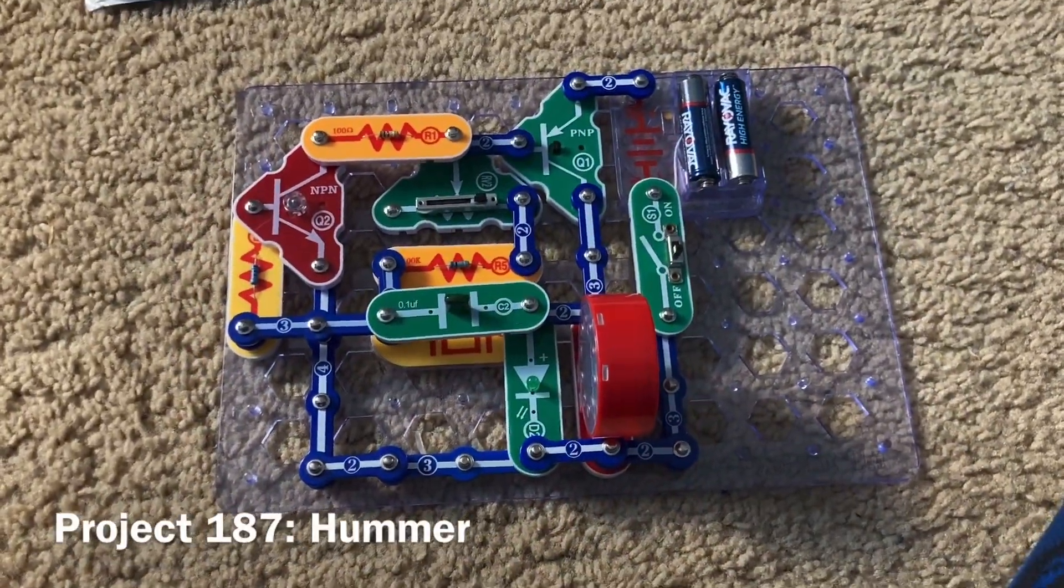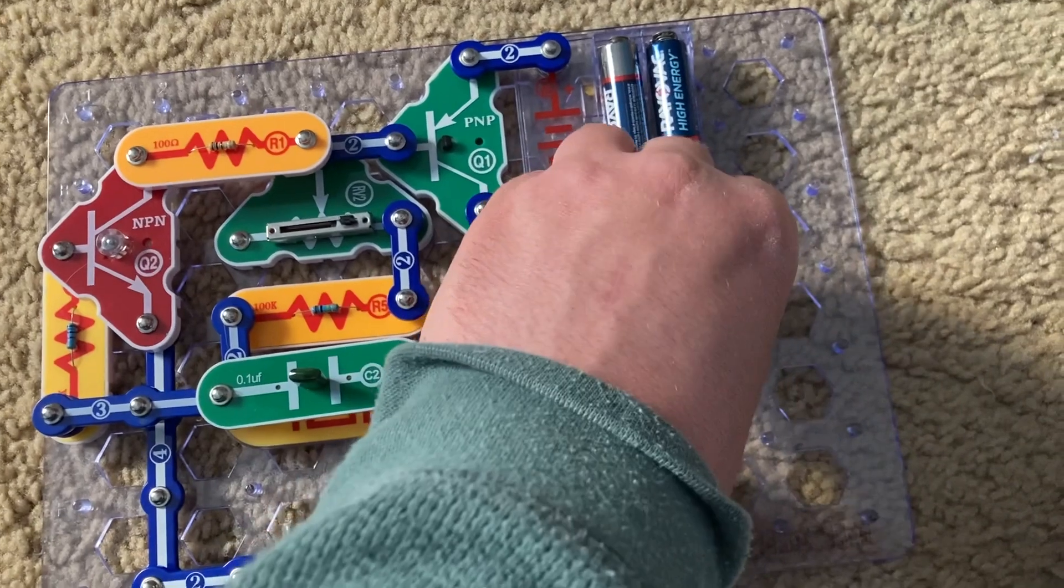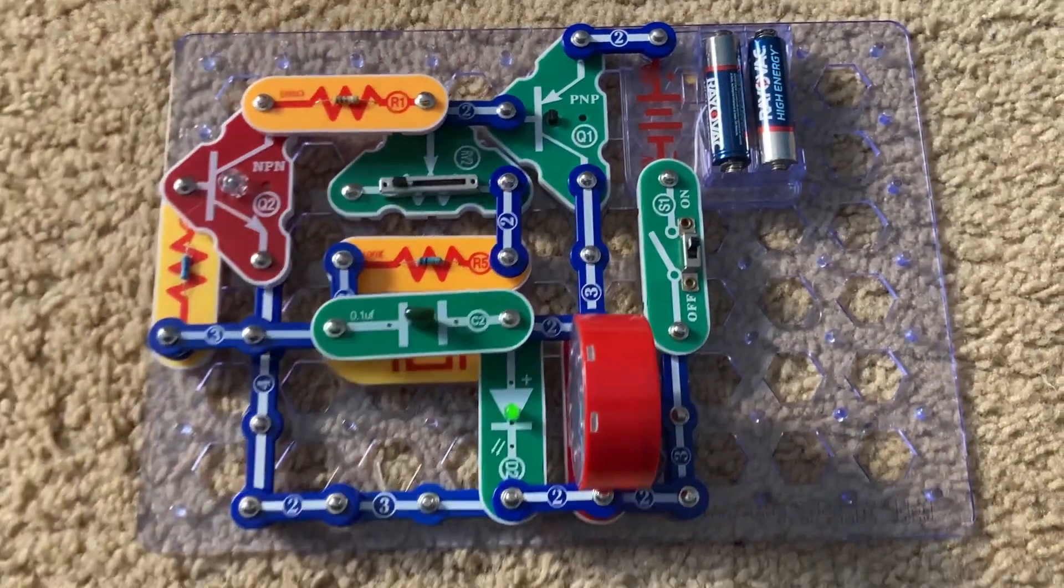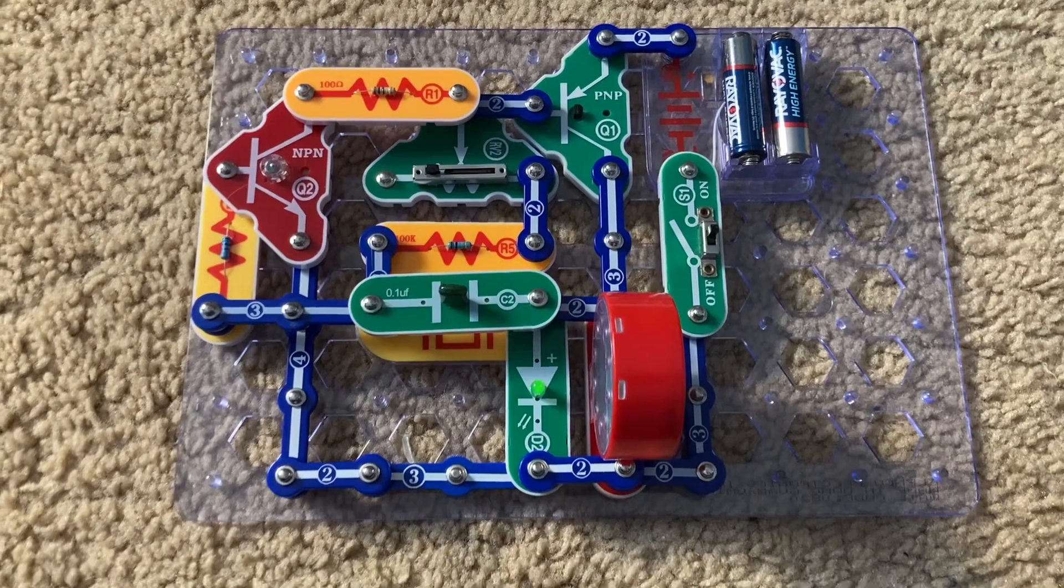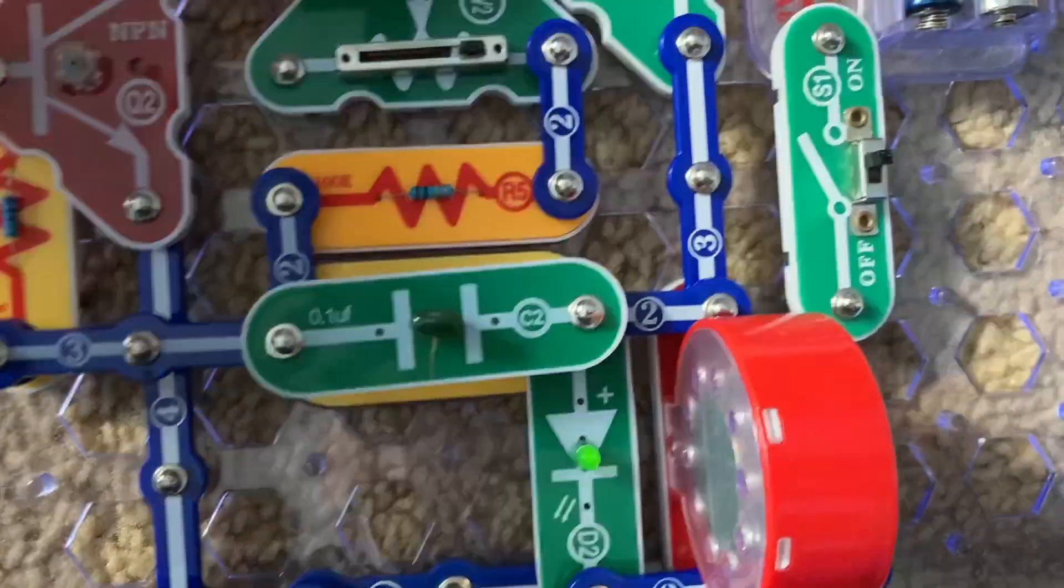This is Hummer. I place the C2 capacitor right over the whistle chip and now the circuit makes a humming sound instead of a whine because of the added capacitance from the C2 capacitor.